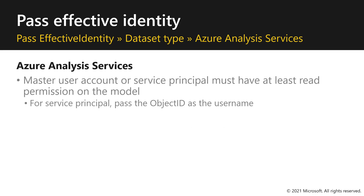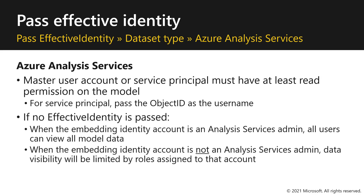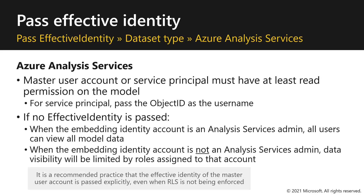For Azure Analysis Services, a master user account or service principal must have at least read permission on the model. For a service principal, you'll pass the object ID as the username. If no effective identity is passed and the embedding identity account is an Analysis Services admin, all users can view all model data. However, when the embedding identity account is not an Analysis Services admin, data visibility will be limited by roles assigned to that account. Note that it is a recommended practice that the effective identity of the master user account is passed explicitly, even when row-level security is not being enforced.